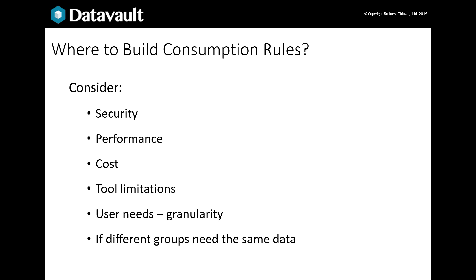Things to consider when deciding where to code the presentation rules are: Security — it's better to keep data in one place in the vault and only let out what's needed. Performance and cost — the vault's generally cheaper and faster. What your BI tool can and can't do — it may have limits on data volumes or number of feeds per day. What your users actually need — do they need aggregate data? It's usually enough for them. And who needs access to what and what overlaps there are between groups of end users.